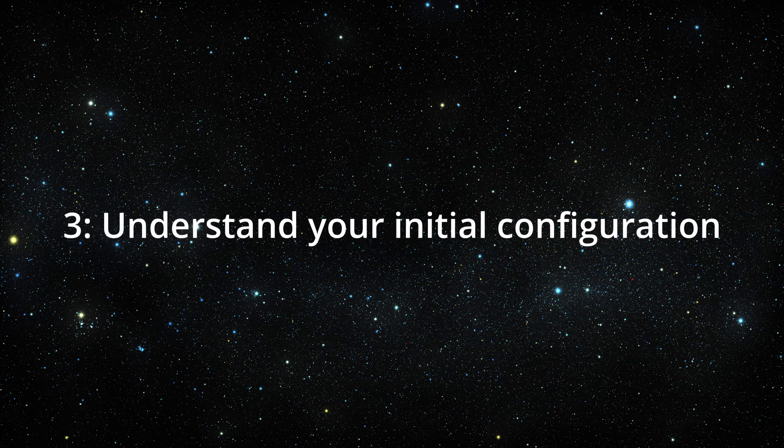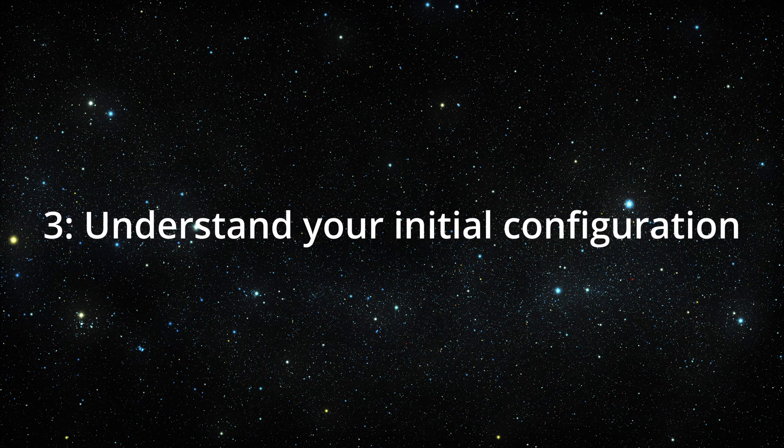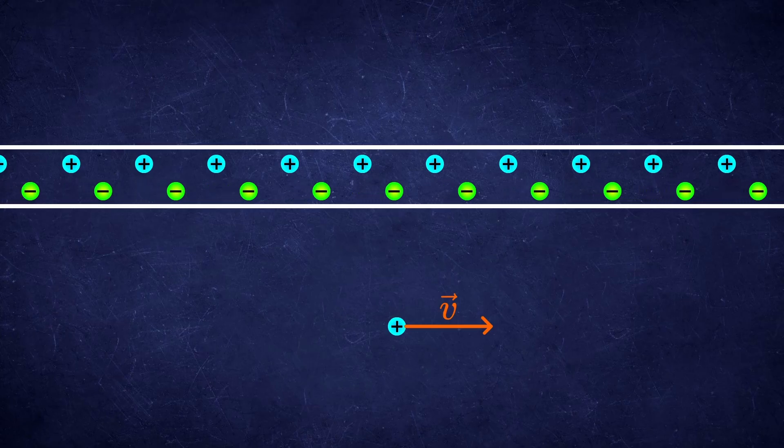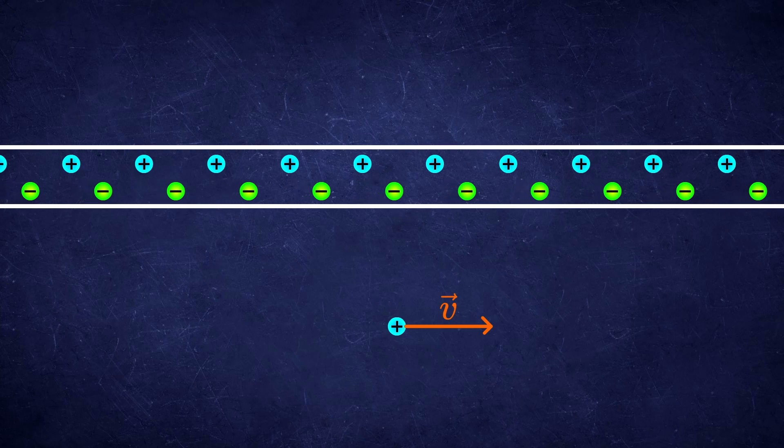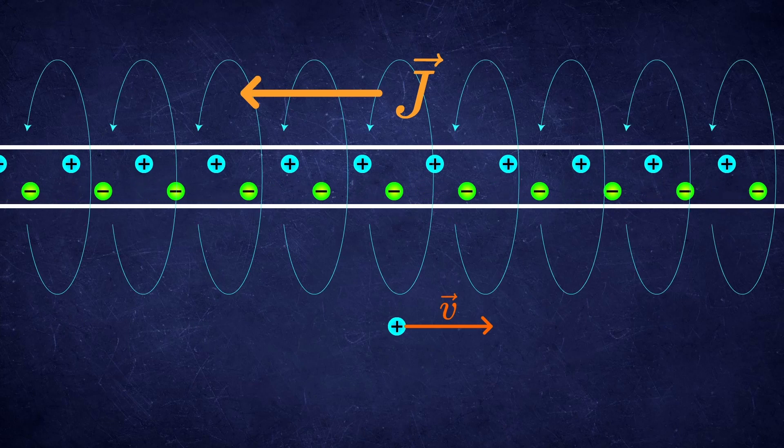Mistake number 3. Understand your initial configuration. This issue was most prominent after I published one of my videos about wire and a charge experiment, where we have a wire with a non-zero current inside. Due to the current, this wire produces a magnetic field around.